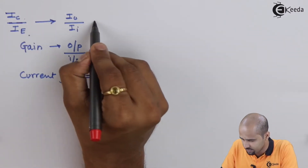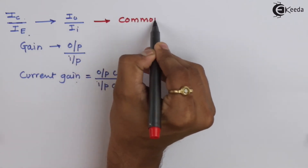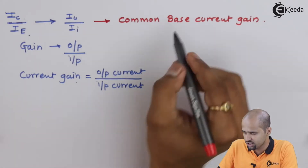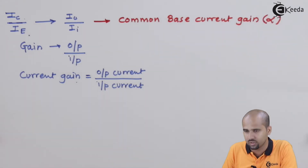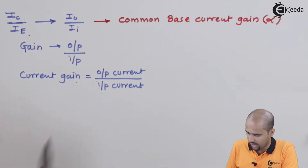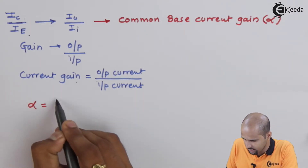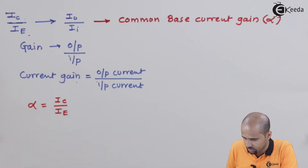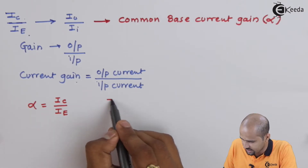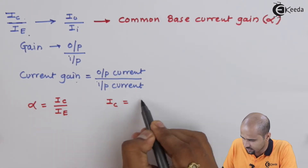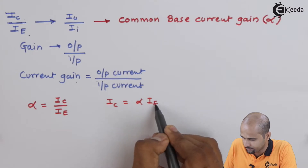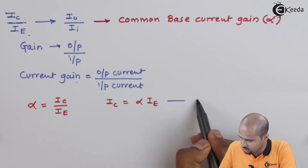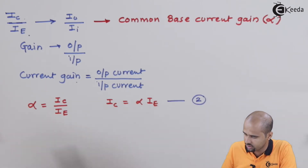The common base current gain is generally denoted by alpha. So alpha is equal to IC divided by IE. In another way, I can express this as IC = alpha times IE. I will name this as equation number 2.